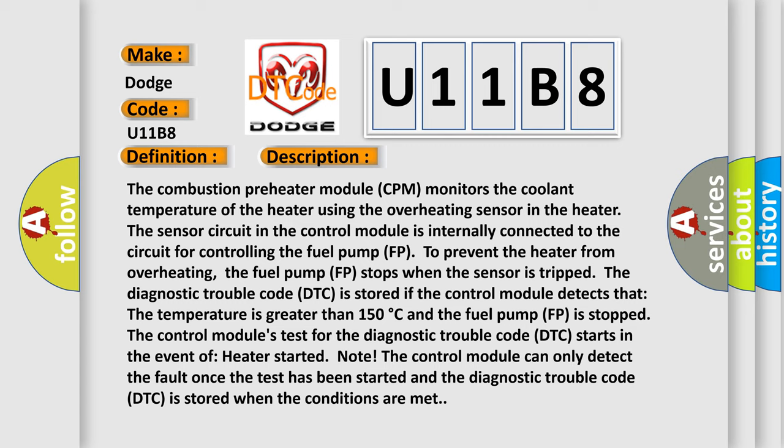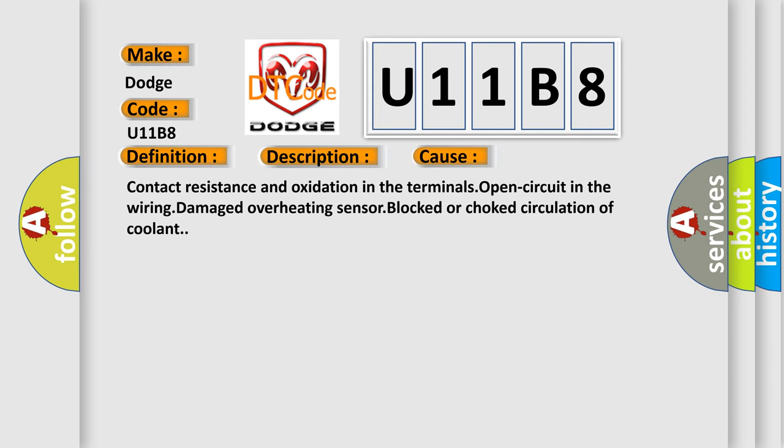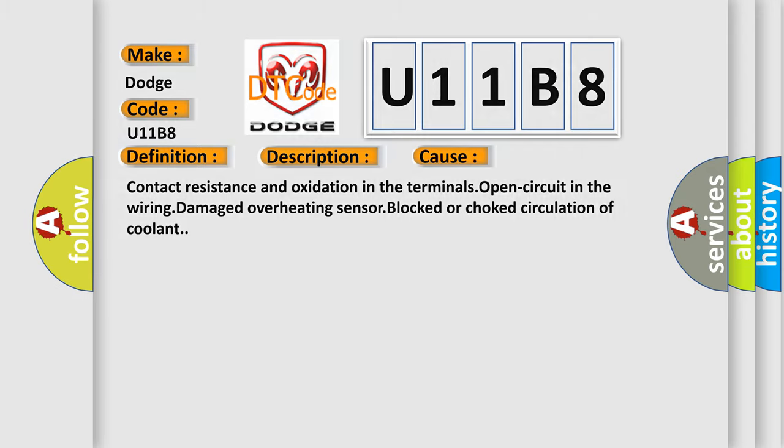The fuel pump FP stops when the sensor is tripped. The DTC is stored if the control module detects that the temperature is greater than 150 degrees Celsius and the fuel pump FP is stopped. The control module can only detect the fault once the test has been started. This diagnostic error occurs most often due to: contact resistance and oxidation in the terminals, open circuit in the wiring, damaged overheating sensor, or blocked/choked circulation of coolant.